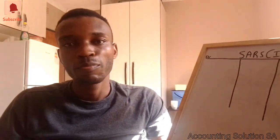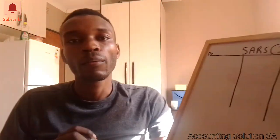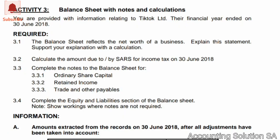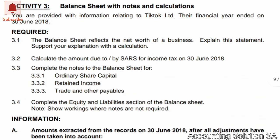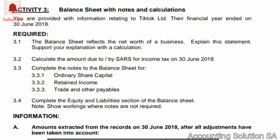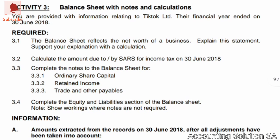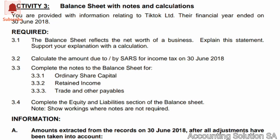Firstly, let's check the information we have been given so that we know what will be required. They said Activity Number 3: balance sheet with notes and calculations. You are provided with information relating to TikTok Ltd for the financial year ended 30 June 2018. The required parts: 3.1 complete a balance sheet, and 3.2 — the one we are looking for now — calculate the amount due to or by SARS for income tax, 30 June 2018.